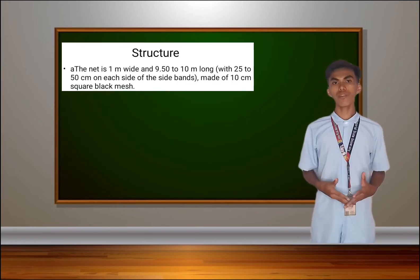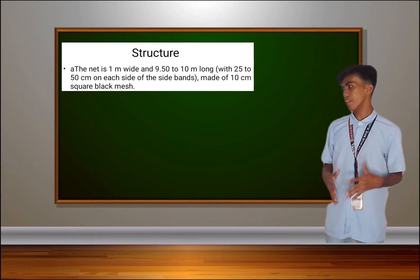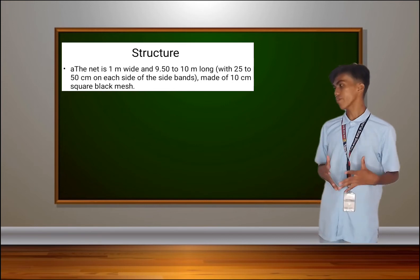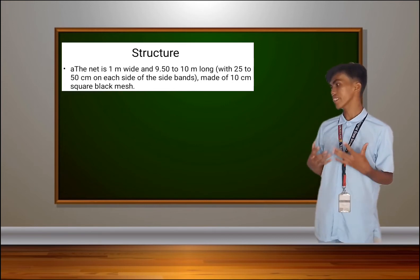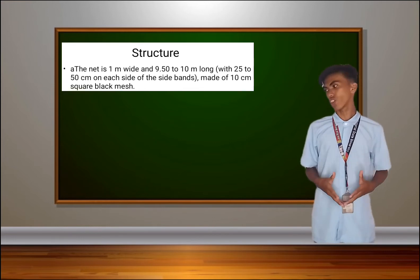Next is the structure of the net. The net is 1 meter wide and 9.50 to 10 meters long with 25 to 50 centimeters on each side of the side bands, made of 10 centimeter square black mesh.